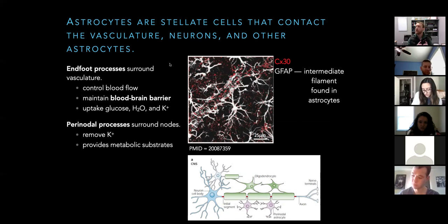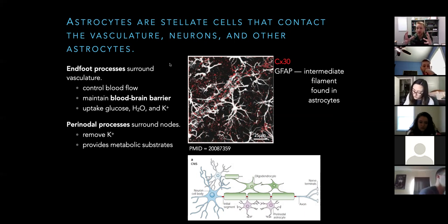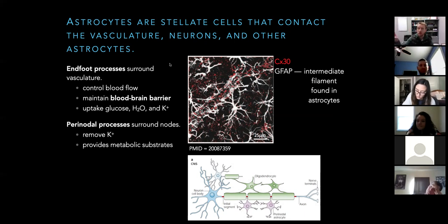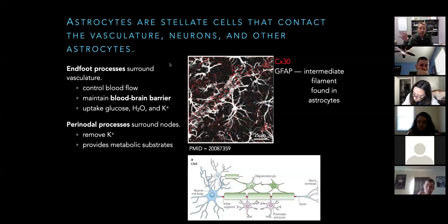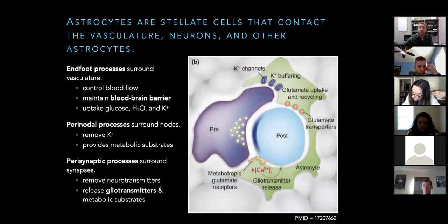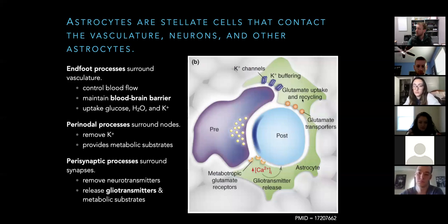The endfeet processes maintain the blood-brain barrier and help regulate blood flow. If neurons are highly active we need more blood — nothing is free — so astrocytes open up blood vessels a little wider to allow more blood flow, pulling in glucose and oxygen to pay the bill. Perinodal processes are near the nodes of Ranvier: they ensure that all the potassium the neuron spits out during the action potential gets removed so it doesn't build up, and they also feed that portion of the axon a little glucose or pyruvate so the neuron can pay the bill. It's good that astrocytes are connected to the blood — that helps supply these metabolic substrates.